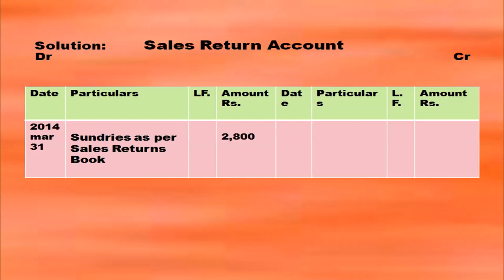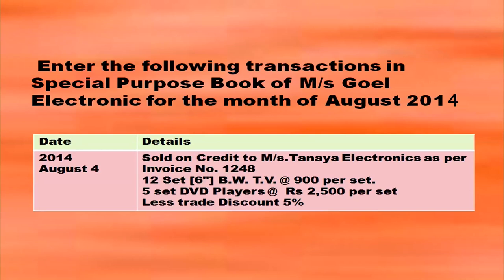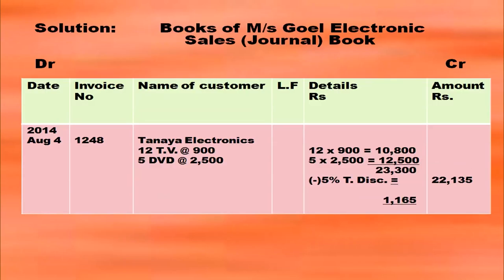Here is a question where you have to identify whether to write in the sales book or in the sales returns book. Enter the following transactions in the special purpose books of Messrs Goel Electronics for August 2015. Sold on credit to Messrs Tanya Electronics with details and trade discount given. If it comes in the sales book, write heading 'Books of Messrs Goel Electronics — Sales Book' with columns: date, invoice number, name of customer, ledger folio, details, and amount.